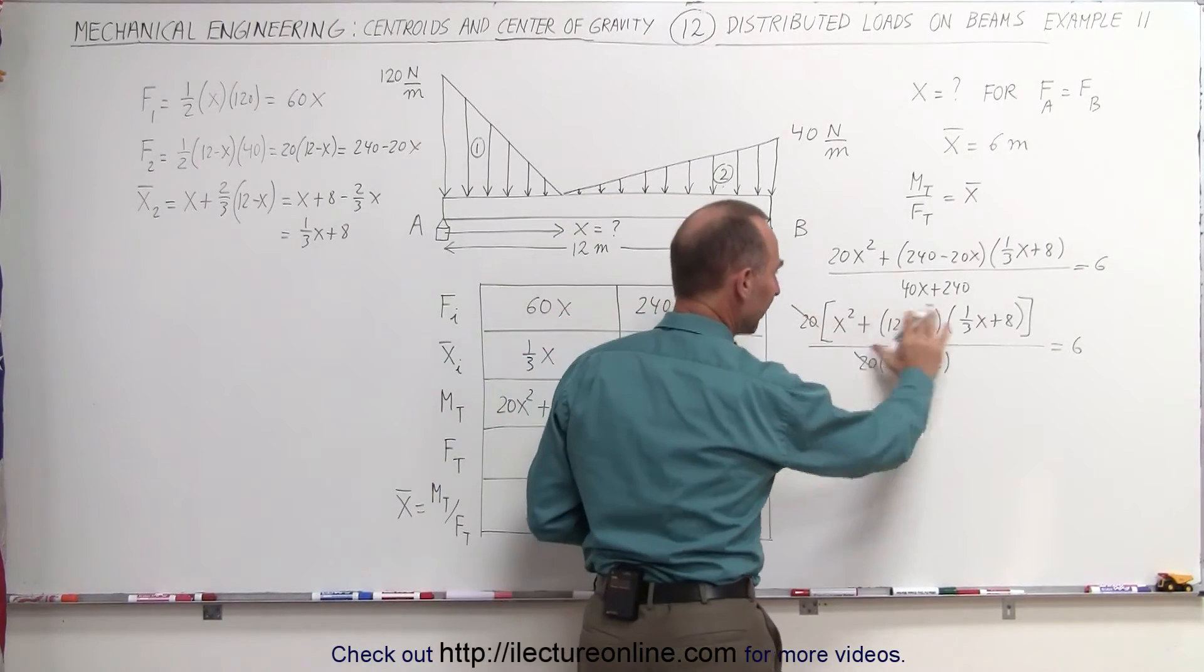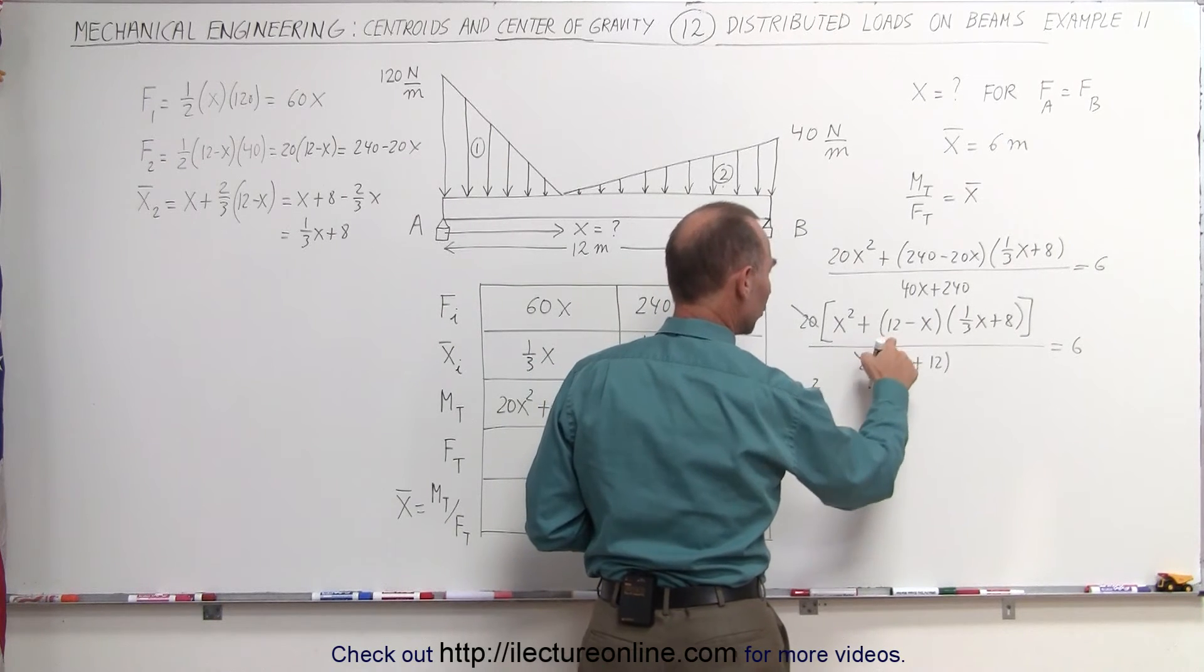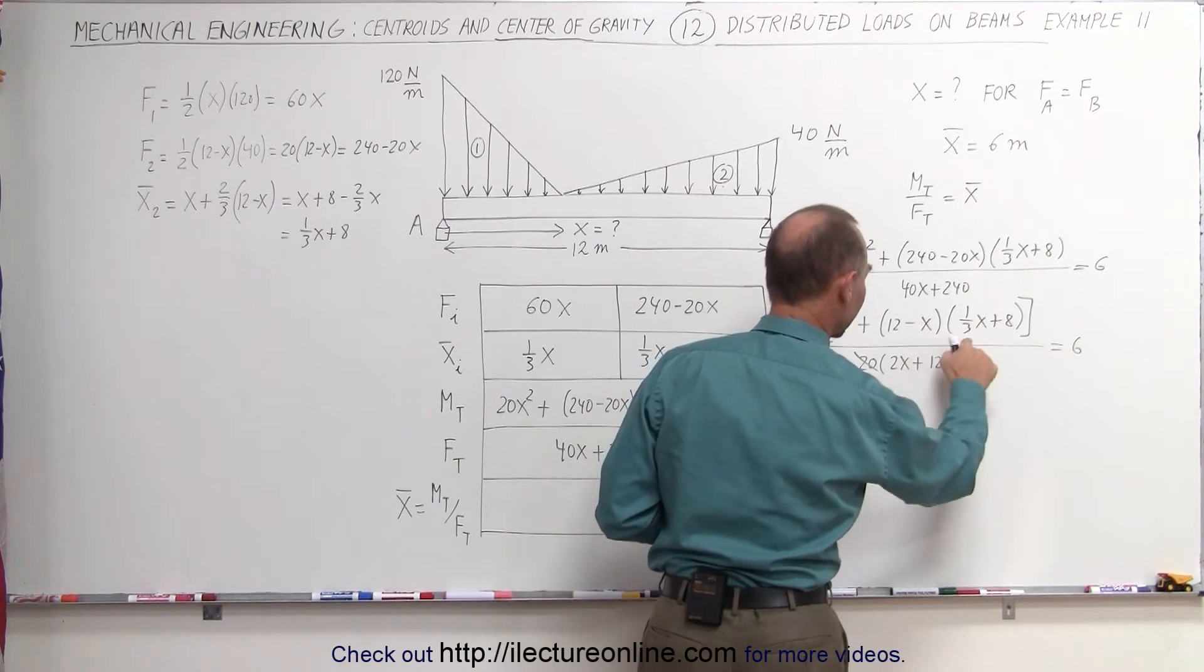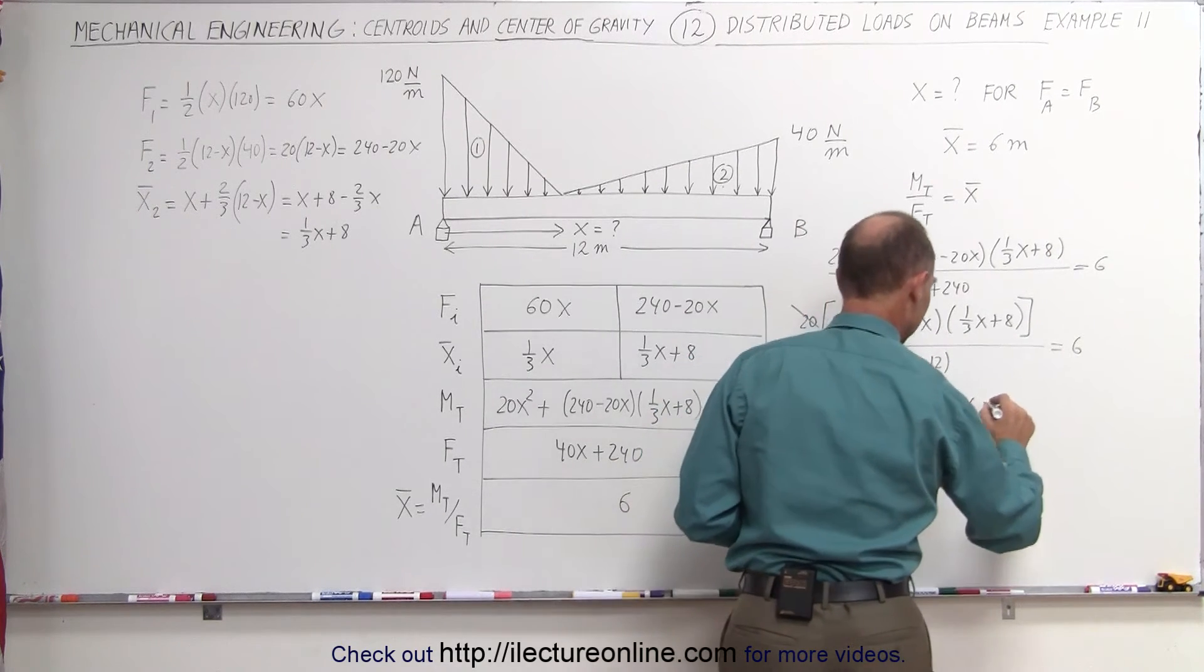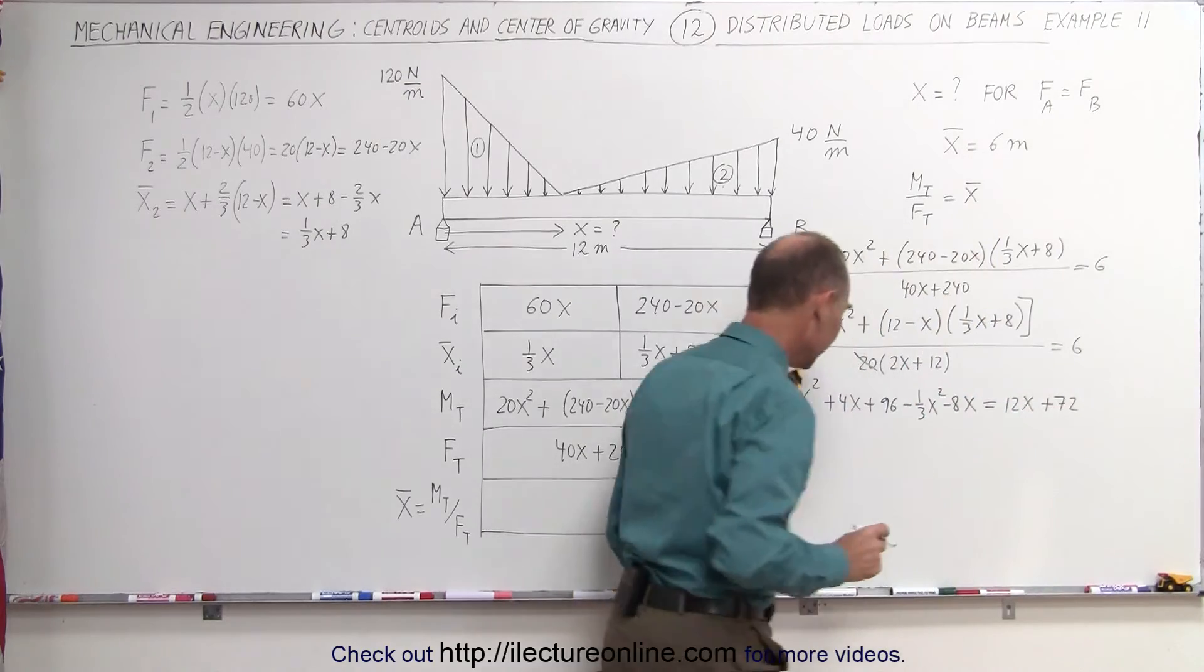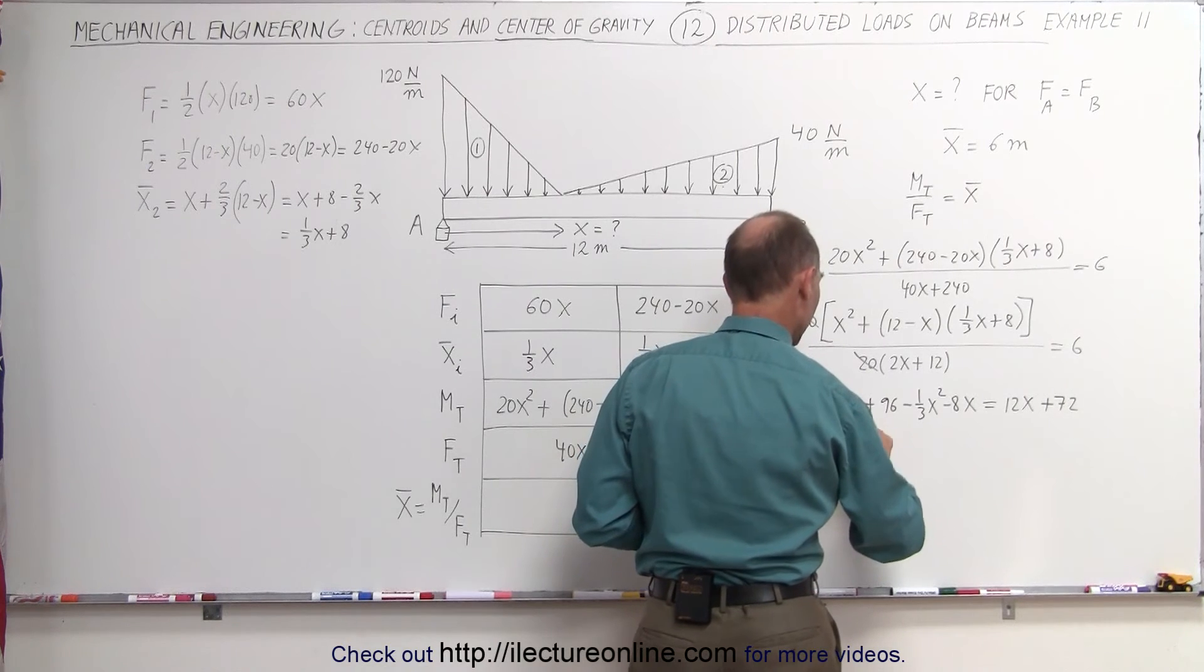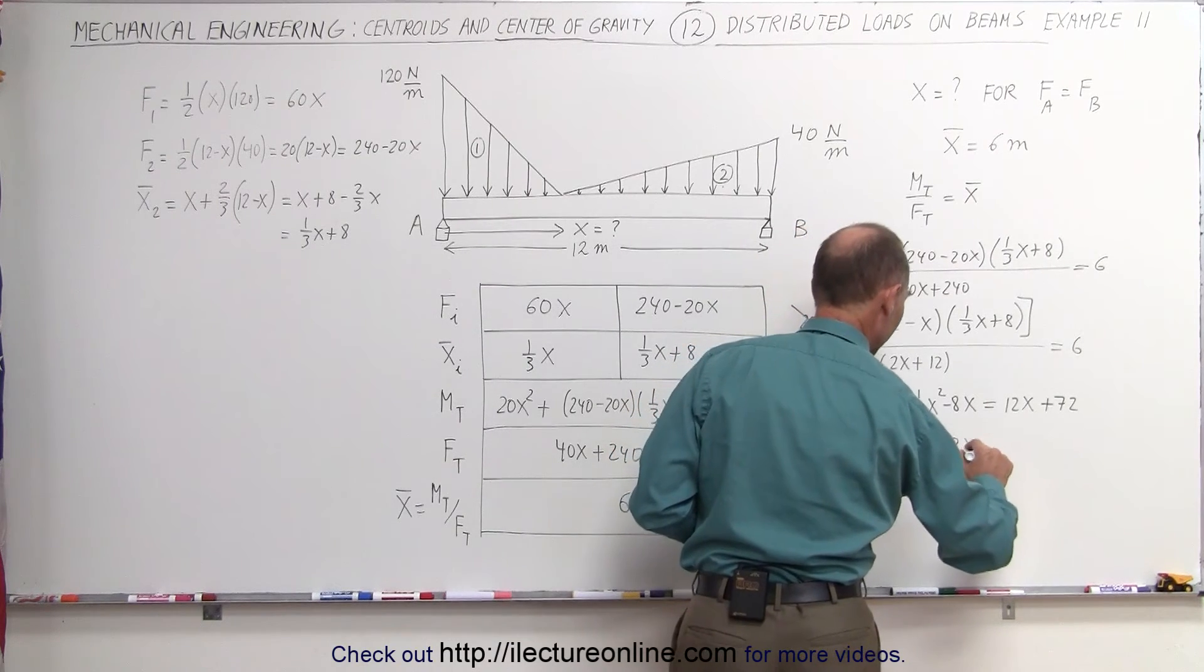Now going ahead and combining this, multiplying this out, combining this, and multiplying this to the right side, see what we get. x squared, 12 times this gives us plus 4x, 12 times this gives us plus 96, plus, oh no, that would be minus, minus x times this is a minus one-third x squared, this times this gives us a minus 8x, and that equals 6 times that is 12x, 6 times this is plus 72. It definitely is a quadratic equation now, we simply need to simplify it. Combining these two terms, we get two-thirds x squared, plus 4x minus 8x is a minus 4x, plus 96 equals 12x plus 72.